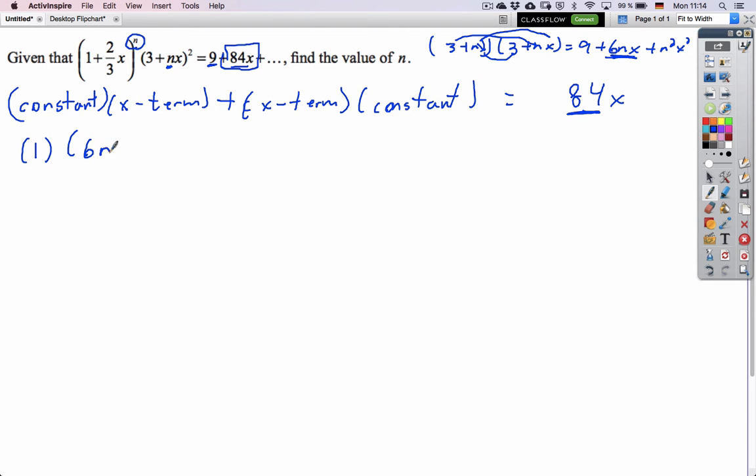So the x term is 6nx. Then we need to add the x term of this first thing. We don't know what that is, but 1 to any power will just be 1, so that's fine. And here, you have 2/3 x, and this needs to be a 1 because we need the x term from this, so then this is a 1, and this is n minus 1.